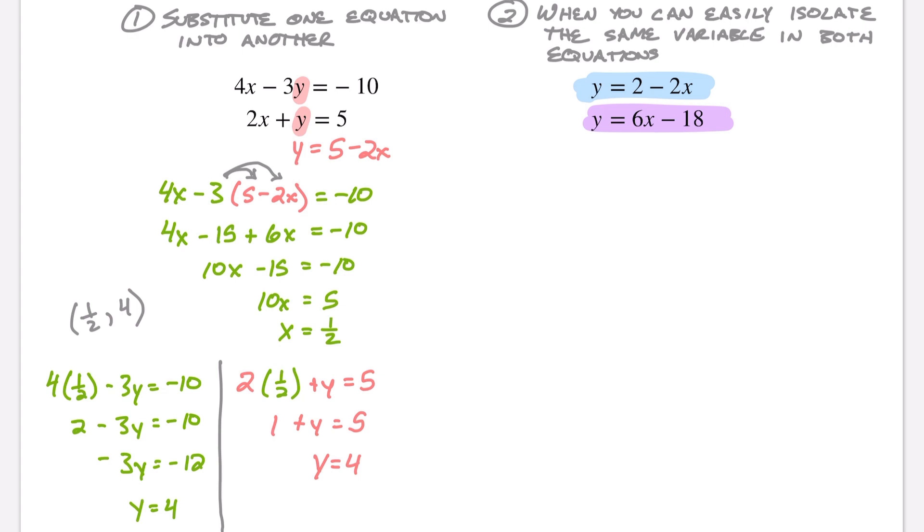So I have 2 - 2x = 6x - 18. All right, well let's add 2x to both sides. 2 = 8x - 18. Add 18 to both sides. So now we've got 20 = 8x. Divide both sides by 8 and we can see that x = 2.5.